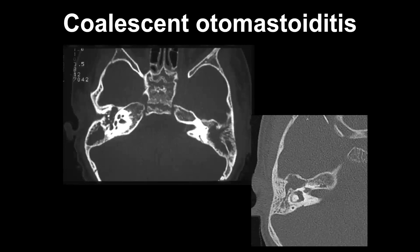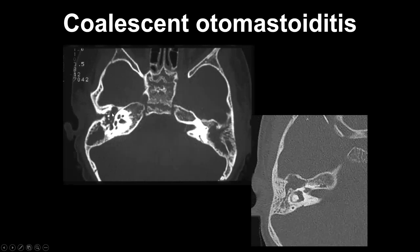Here, however, is a patient who has a somewhat different appearance, in that we have lost the septations within the mastoid air cells bilaterally. There still is opacification of the middle ear cavity. With this loss of the normal septations of the mastoid air cells, we would call this coalescent mastoiditis, or coalescent otomastoiditis because there's inflammation in both locations.